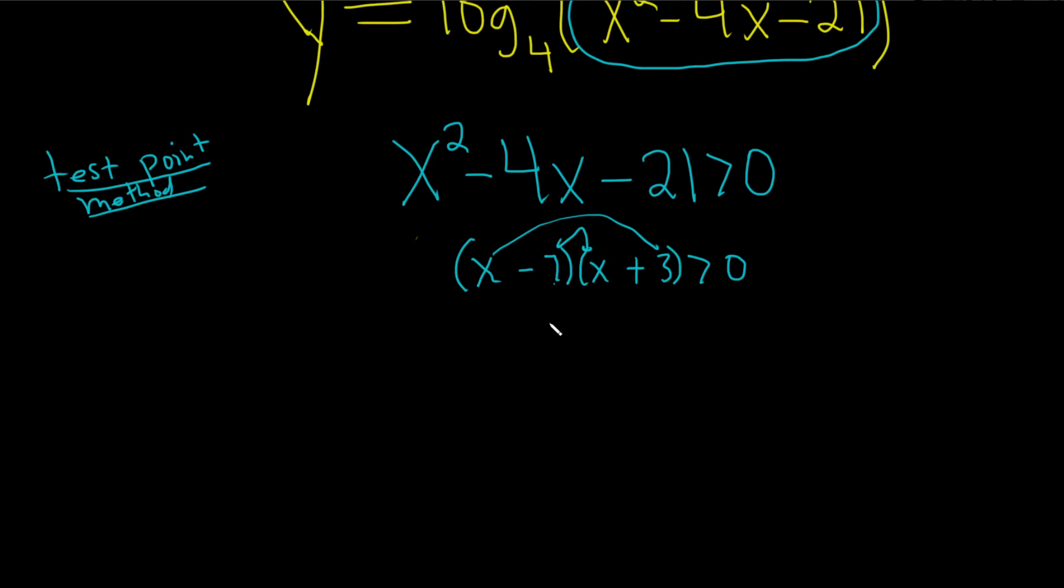Okay, so that's the first step in the test point method is you want to make sure it's all factored and you have one thing on one side and 0 on the other. The second step in the test point method for solving quadratic inequalities is to set each of these factors equal to 0. And the reason is those are the places where this expression might change sign. So you set x minus 7 equals to 0. Okay, these are the steps for the test point method.